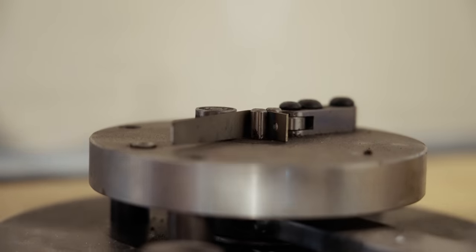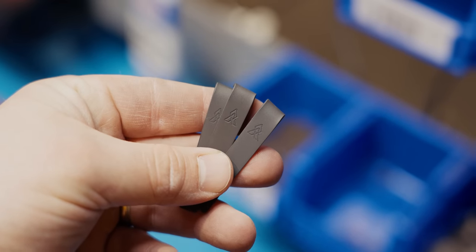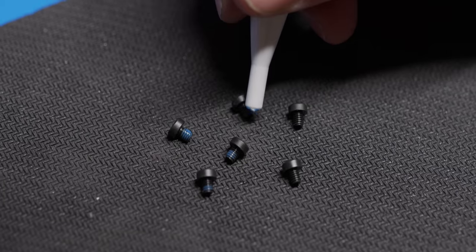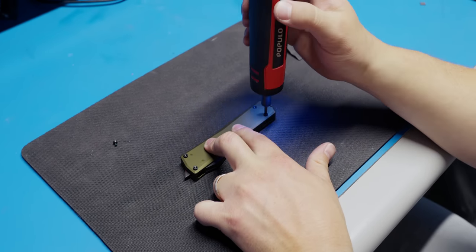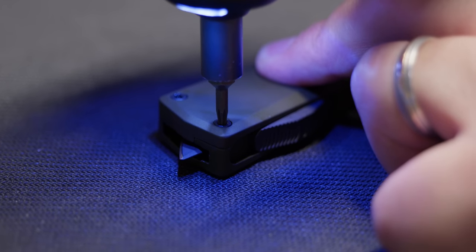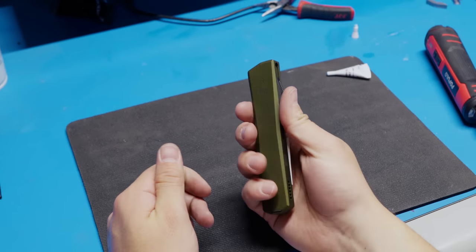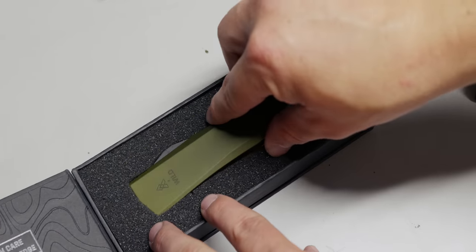Another highlight of Axial specifically is they do not use proprietary screws on their OTFs, and in fact upgraded the hardware from a T6 to a T8 so that people who buy their knives can open them up if they feel the need to. The great thing is that Axial offers an awesome lifetime warranty, so you don't need to take apart your knife unless you really want to.